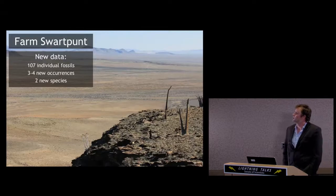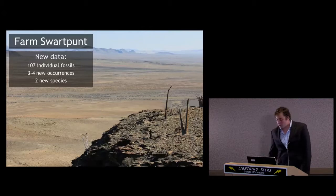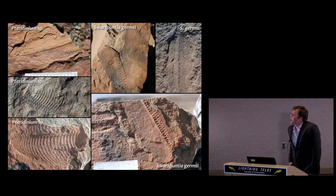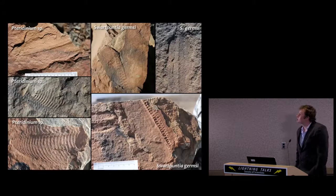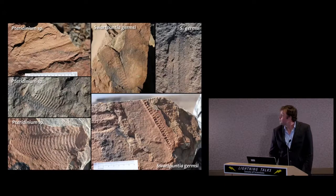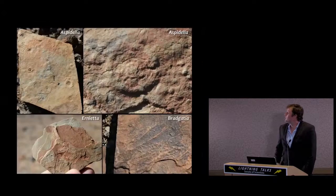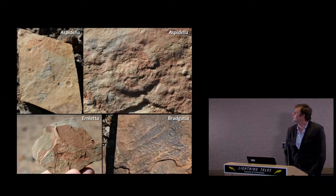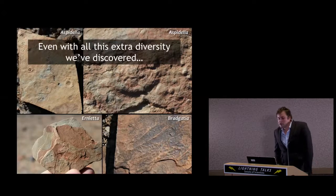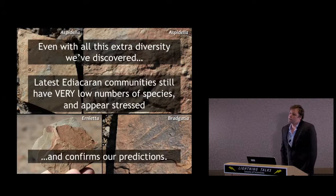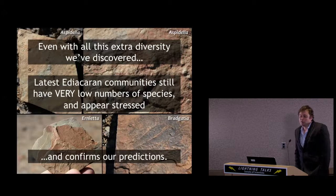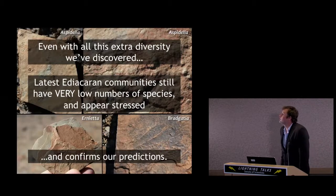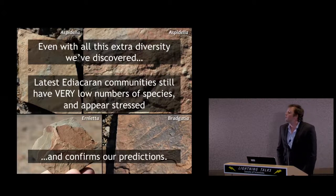I've been to a place called Farm Swartpunt, collecting new fossils. At this stage we have 107 individuals and at least two new species. We have familiar frondose organisms called Pteridinium and Swartpuntia, which we more or less expected. We've also found Braggatia, Arnietta, and holdfasts called Aspidella. But even with all this extra diversity, these latest Ediacaran communities still appear stressed and have very low diversity. This appears to corroborate the idea that they're being engineered away by early members of the Cambrian evolutionary fauna.